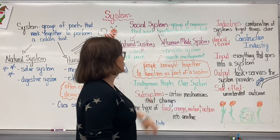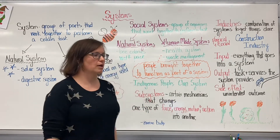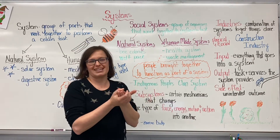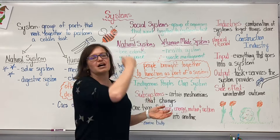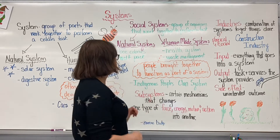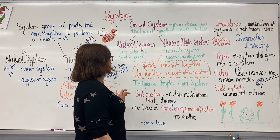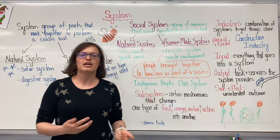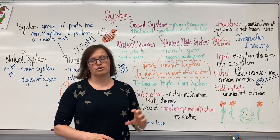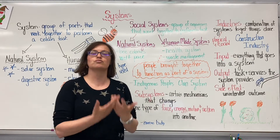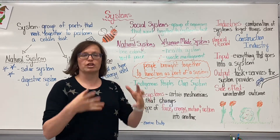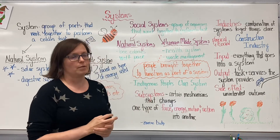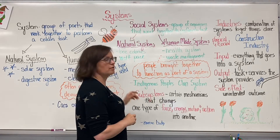Human-made social systems — if we think about the health system, waste management, or like an orchestra — these are people that are brought together to perform a certain task to make an entire system work. We've also been thinking about Indigenous communities. Indigenous peoples and their clan system: when you are part of a certain clan, you have a certain role or function within your community, and then all of those clan identities come together to help that social system of that First Nations.